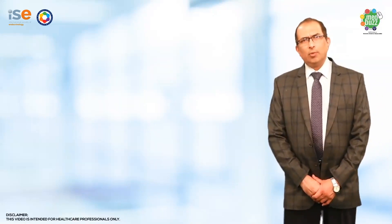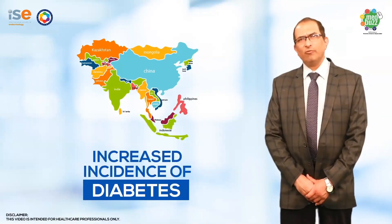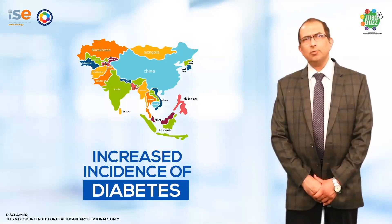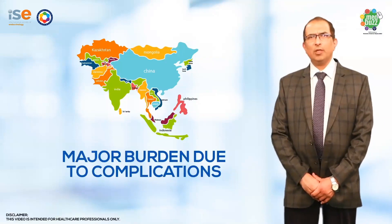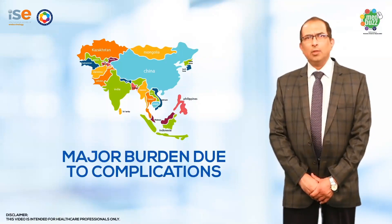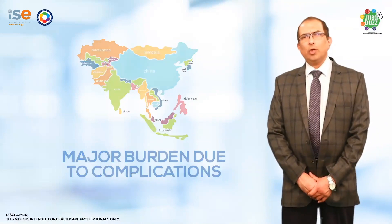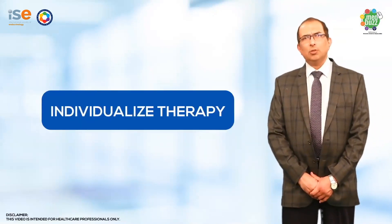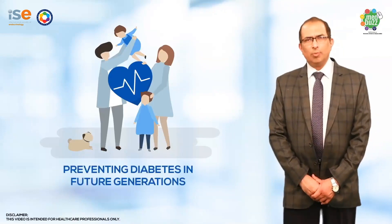Today diabetes is becoming a major problem — a major burden — with the numbers of people with diabetes increasing significantly, particularly in the South Asian region. We have a huge burden of diabetes because of its complications, and therefore when we treat these patients, we need to look at preventing the complications and individualize therapy so that we provide them the best treatment, also in terms of preventing diabetes in future generations.